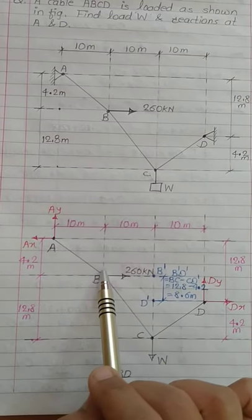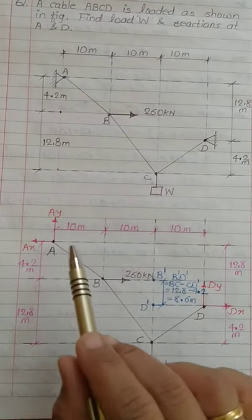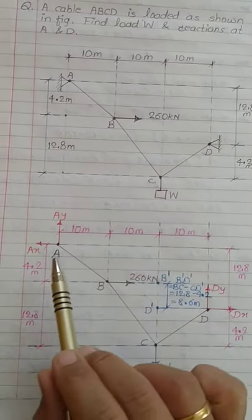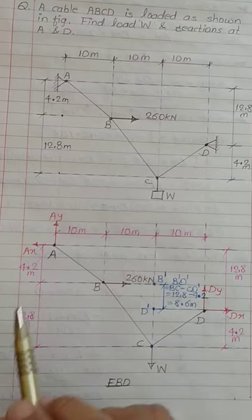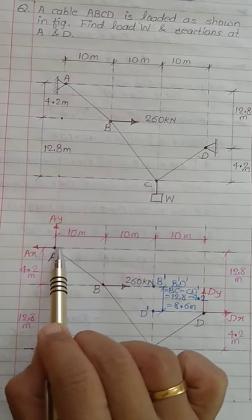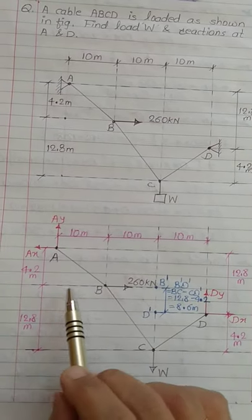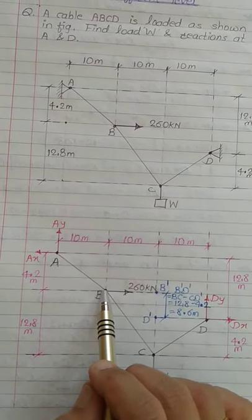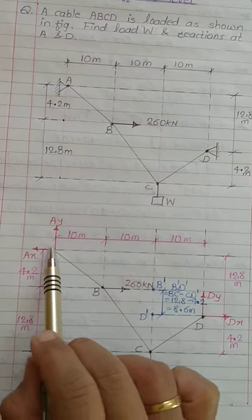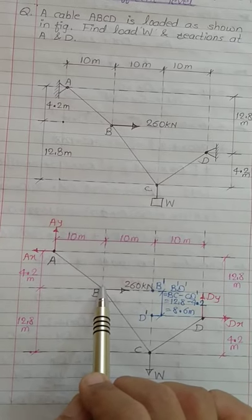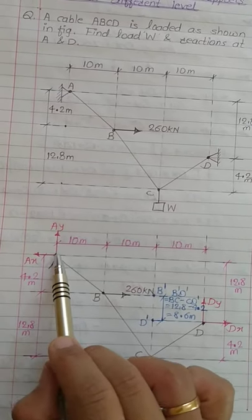We will draw the free body diagram showing all the points and forces acting at points B and C, and all the distances between different points in both horizontal and vertical directions. We also show the reaction components at points A and D. In a cable, there are always tensile forces, so from point A towards point B there will be a tensile force, and the same force will act as the reaction at point A.